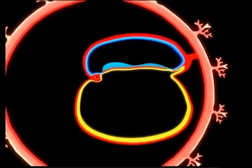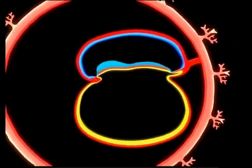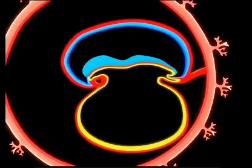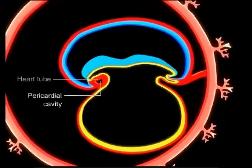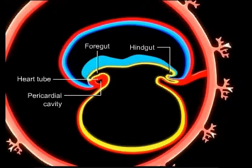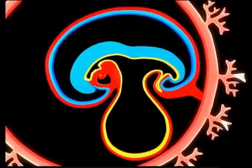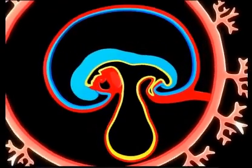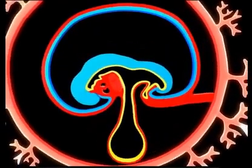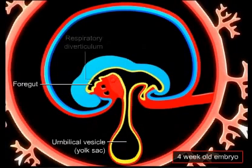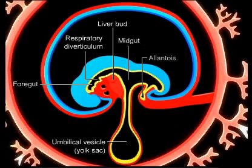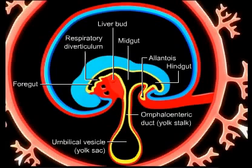Between the ectoderm and endoderm lies the mesoderm, which will create the connective tissues and musculature. In most organisms, before gastrulation, these layers are not defined. The cavity above the ectoderm is the amniotic cavity, while that below the endoderm is the yolk sac. The embryo then folds upon itself to form the embryonic gut tube: foregut, midgut, and hindgut.